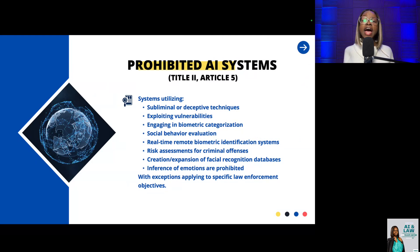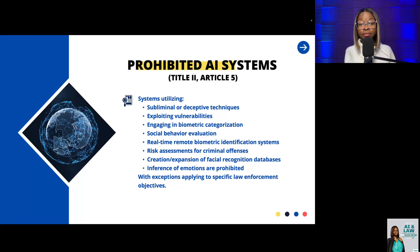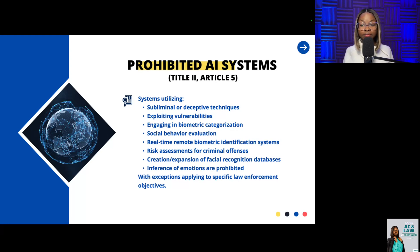The prohibited AI systems include those utilizing subliminal or deceptive techniques, exploiting vulnerabilities, engaging in biometric categorization, social behavior evaluation, real-time remote biometric identification systems, risk assessments for criminal offenses, creation or expansion of facial recognition databases, and inference of emotions. These are prohibited, with an exception that applies to specific law enforcement objectives.